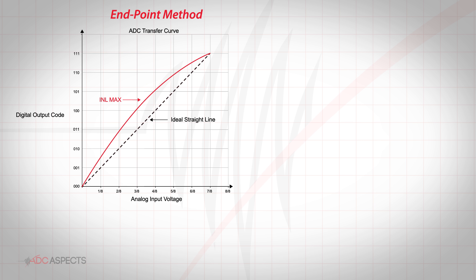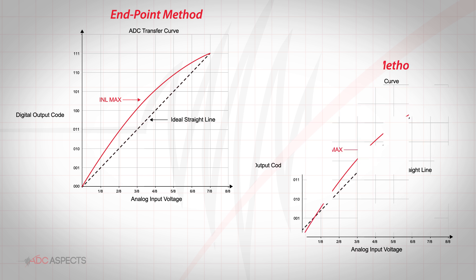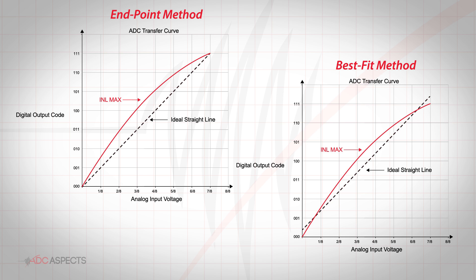To add to the complexity, the ideal straight line can also be defined in different manners, either using the end point method or best fit method. For the end point method, the deviation is measured from the straight line that runs through the origin to the full scale point. This is the most useful INL measurement for precision measurements as it provides the worst case INL, which can be used for error budget calculations. For the best fit method, the ideal transfer curve is drawn as a close linear approximation to the actual transfer function of the ADC. Doing so incorporates the ADC's offset and gain errors and results in nearly a 50% lower INL value. So care must be taken when comparing datasheet specs.